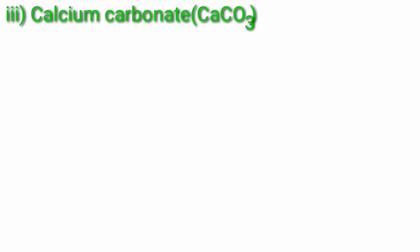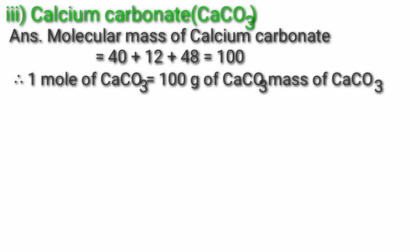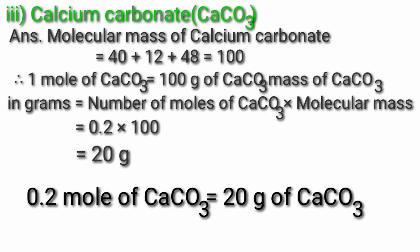Third, calcium carbonate, CaCO₃. Molecular mass of calcium carbonate = 40 + 12 + 48 = 100. Therefore 1 mol of CaCO₃ = 100g. Mass of CaCO₃ = number of moles × molecular mass = 0.2 × 100 = 20g. So 0.2 mol of CaCO₃ = 20g of CaCO₃.